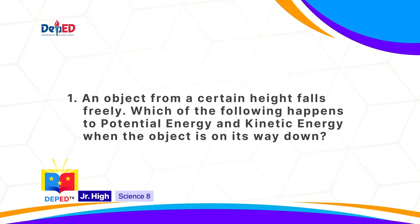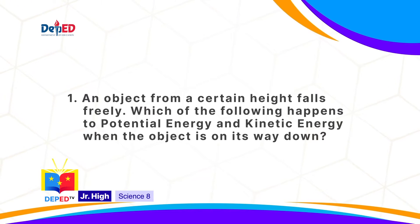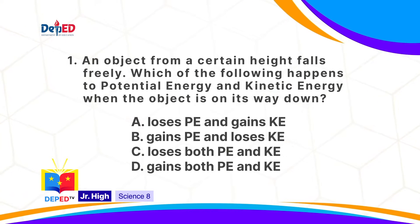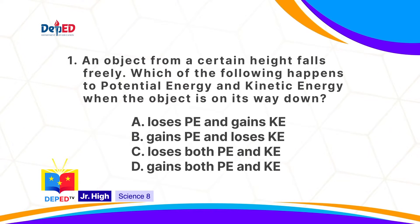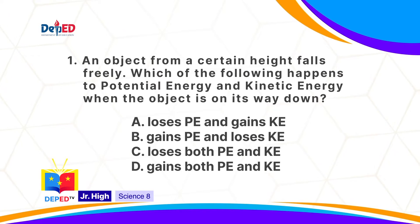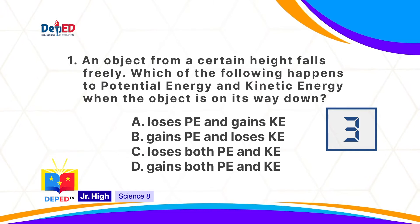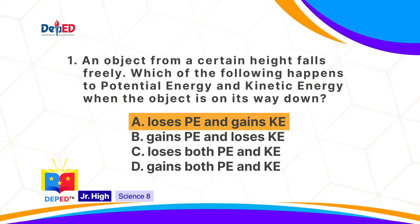An object from a certain height falls freely. Which of the following happens to Potential Energy and Kinetic Energy when the object is halfway down? A, loses Potential Energy and gains Kinetic Energy. B, gains Potential Energy and loses Kinetic Energy. C, loses both Potential Energy and Kinetic Energy. D, gains both Potential Energy and Kinetic Energy. The correct answer is A: loses Potential Energy and gains Kinetic Energy.